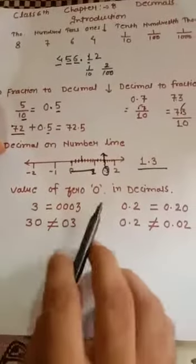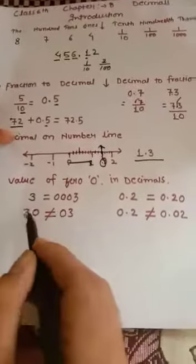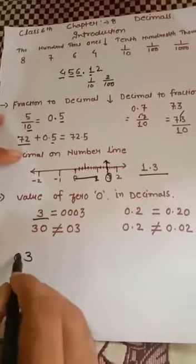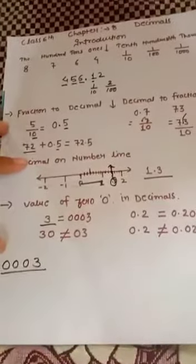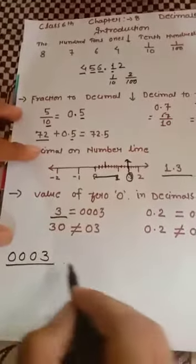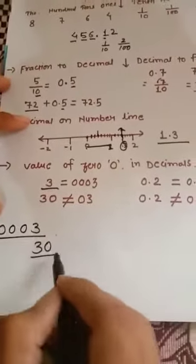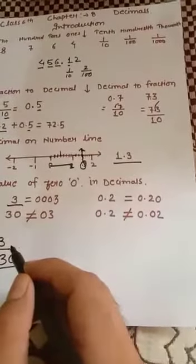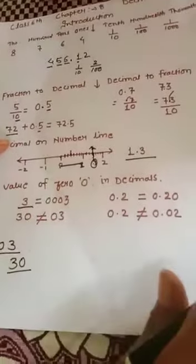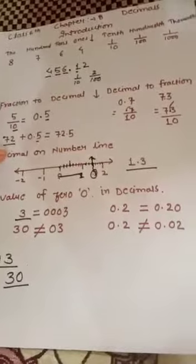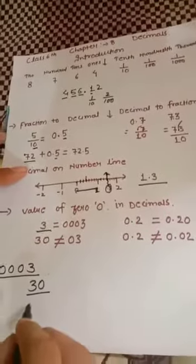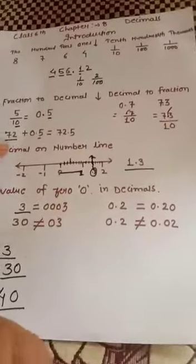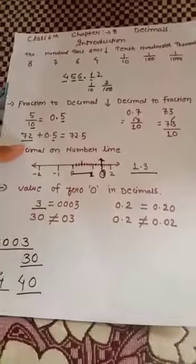Now, an important point: the value of zeros in decimals. As we know, if we write the number 3 and put zeros on its left-hand side, the value does not change. But if we put a zero on the right-hand side of 3, it becomes 30 and the value changes. So for whole numbers: adding zeros to the left does not change the value, but adding zeros to the right does change the value.